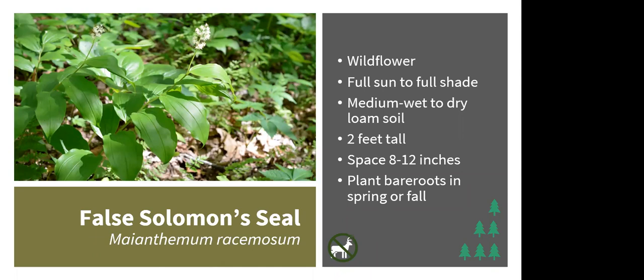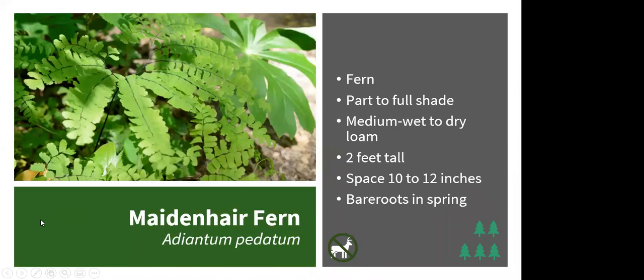Moving on to ferns: if you're looking for an alternative to hostas, ferns are a great choice. Maidenhair fern is particularly interesting for its U-shape frond arrangement and wiry black stems. It grows up to 2 feet tall and spreads slowly through rhizomes. Contrary to what you might expect for a fern, maidenhair can do okay if the soil is a bit drier — not just medium-wet. Plant bare roots in spring. It's been studied to be deer resistant.